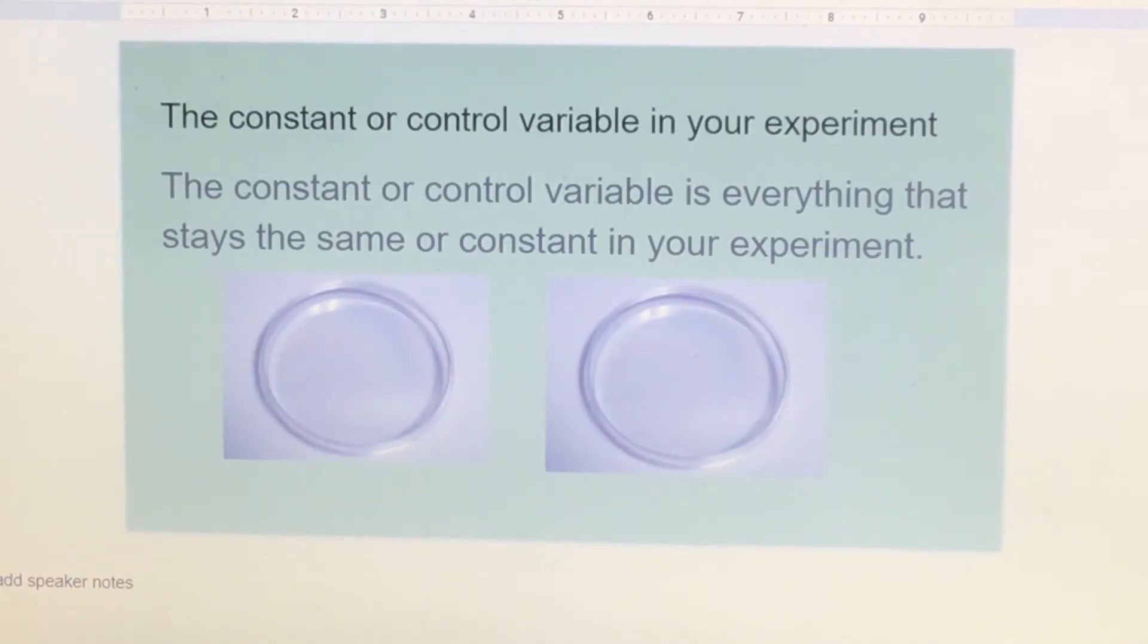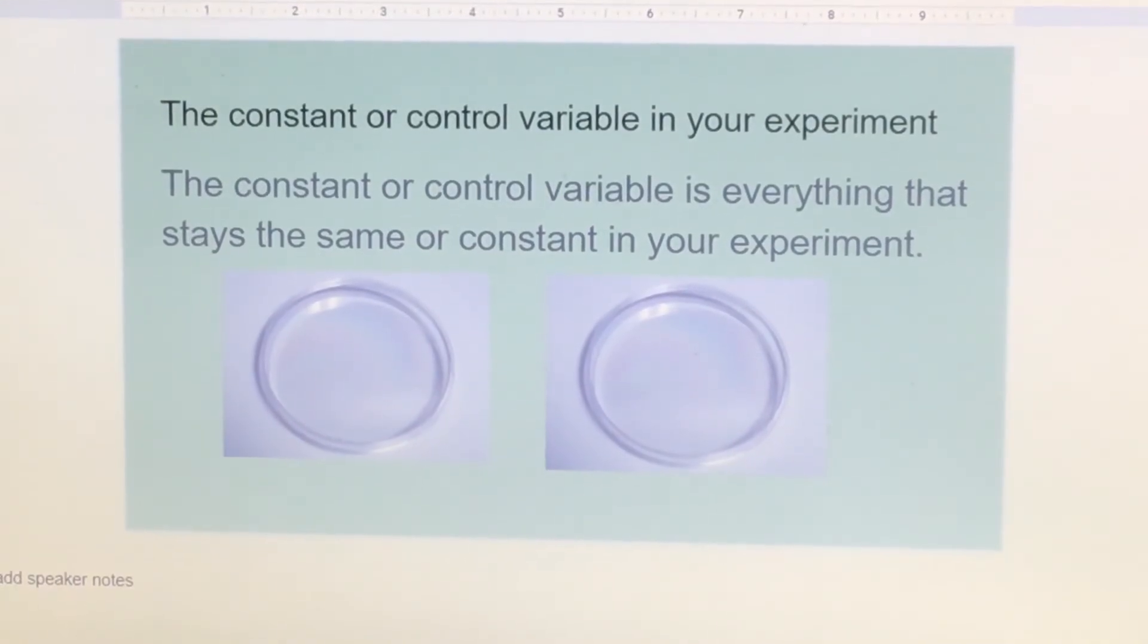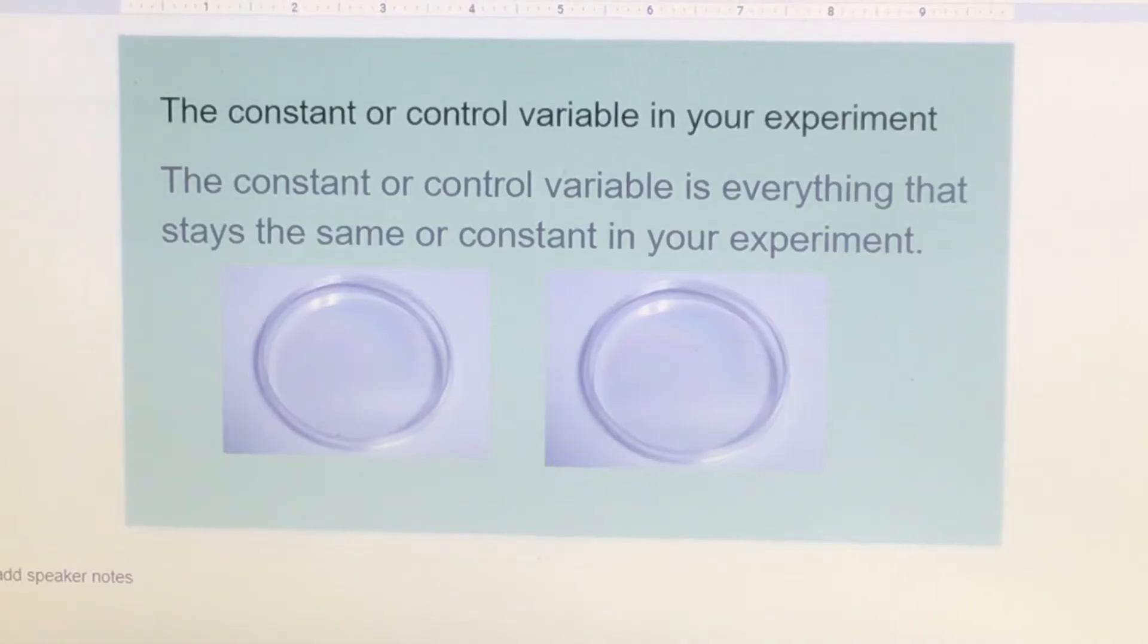We'll talk a little bit about the constant or control variable in your experiment. The constant or control variable is everything that stays the same or stays constant in your experiment.